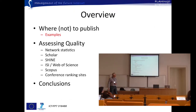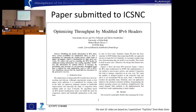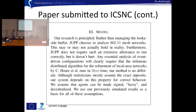Let me move to examples. This is a paper submitted a while back to a conference — a bit hard to read. The title is 'Optimizing Throughput by Modified IPv6 Headers.' The people who submitted it are from the University of Cologne: Grunsch K., Steven, Uwe Helmensig, and Edwin Steinkoffer. Read this carefully — what do you think of it?